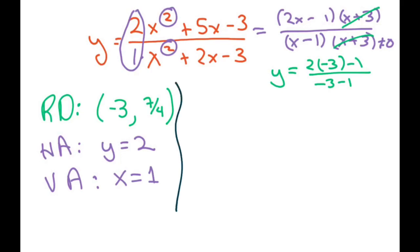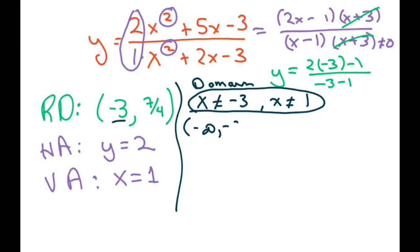So we know that x cannot be negative 3, x cannot be 1. So writing in interval notation, you could just write this for your domain if you wanted. But if you have to write interval notation, you have to write it from least to greatest, negative infinity to negative 3, or negative 3 to 1, or 1 comma infinity.